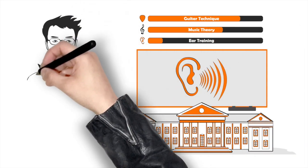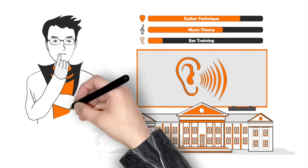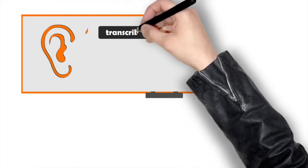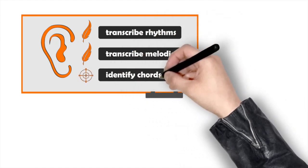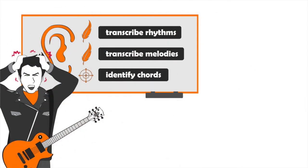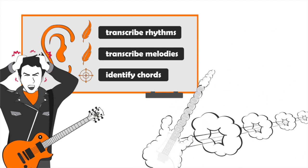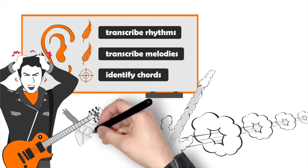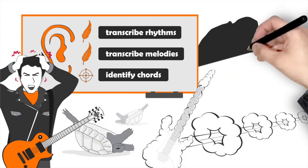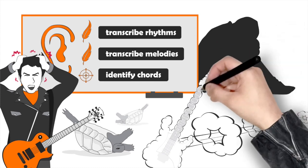That ear training class made me seriously wonder if I had what it takes to call myself a musician. Our professor taught us how to transcribe rhythms, melodies, and identify chords by ear. But I wasn't getting it, and I couldn't keep up with the class. The worst part was, everyone seemed to be leaving me in the dust with how fast they were improving. I was feeling helpless, like a turtle on its back. It was not a nice feeling for somebody who already saw himself as an advanced guitar player.